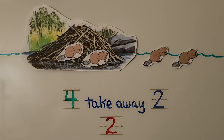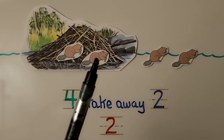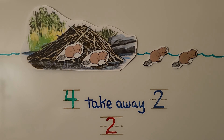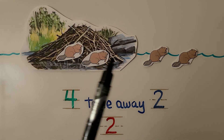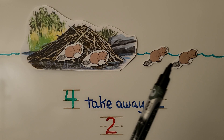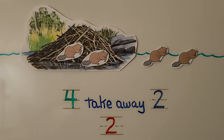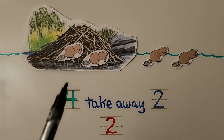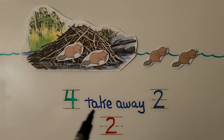Beavers use sticks and mud to build their home, and their home is called a lodge. There are four beavers in all in this picture — one, two, three, four. There are two beavers that swim away — one, two. How many beavers are left at the beaver lodge? There were four in all. We take away the number that are leaving from the number in all, and we count the number of beavers still at the lodge. One, two. Four take away two is two.